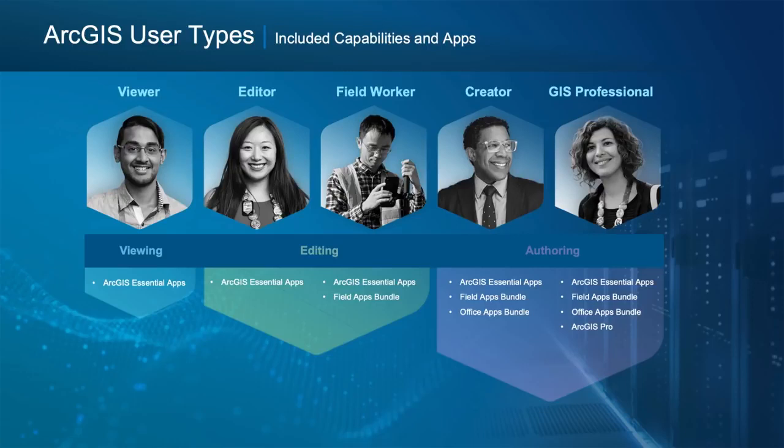An Editor has the capability of a Viewer, but can additionally edit existing data and add new data. A Field Worker adds data collection capabilities and apps to what the Editor can do. And then the GIS Professional adds ArcGIS Pro to the Creator user type. So it's pretty easy: Level 1 becomes a Viewer, Level 2 is a Creator, and you have three other options as you add more people to your organization.